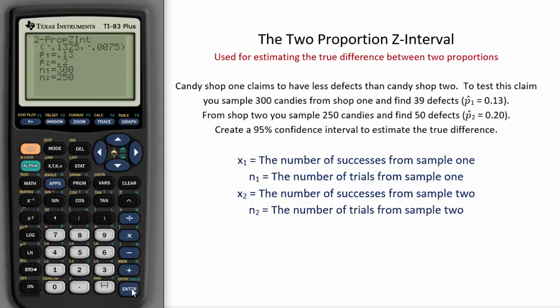Since zero is not in our interval, we have evidence of a difference, and it looks like store 1 has fewer defects than store 2.